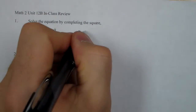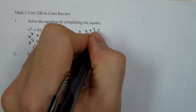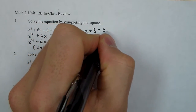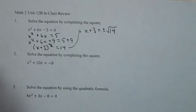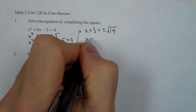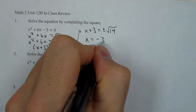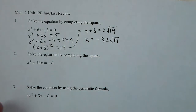From here we're going to take the square root of both sides. We get x plus 3 equals plus or minus the square root of 14. And then last we subtract 3: x equals negative 3 plus or minus the square root of 14 as our answer.